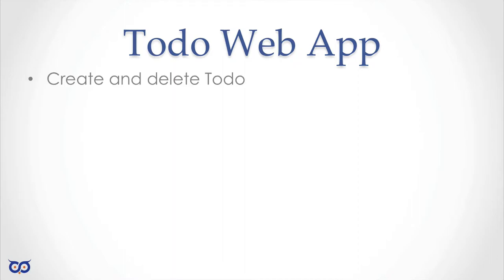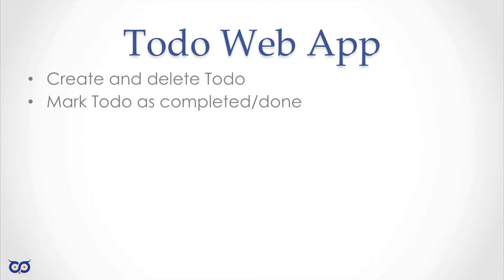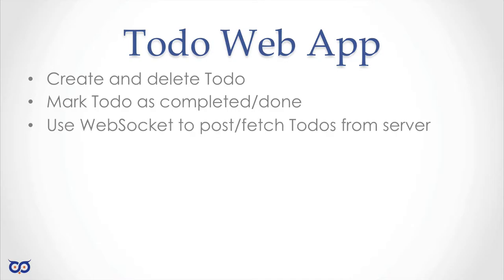What we want to do in part one is develop the very basics of a to-do application. Our to-do app will allow us to create and delete to-dos. I decided to do a to-do application because the other application we were working on was still sort of big, and I want to simplify the scope a little bit. We're also going to be able to mark a to-do as completed or done.